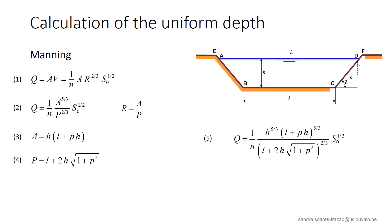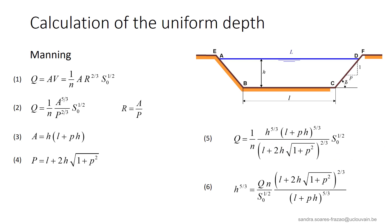A more difficult problem is to calculate the depth H at which the uniform flow will establish itself for a given discharge, knowing the geometric details of the channel. To do this, we need to isolate H from equation 5, which is impossible as H appears here with different exponents. So we rewrite this equation by isolating the highest power of H. Equation 6 can then only be solved by iterations.